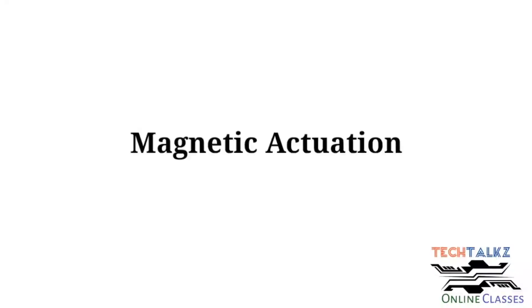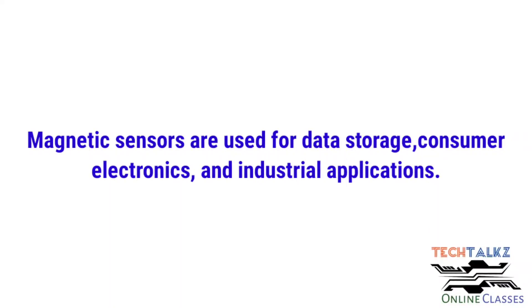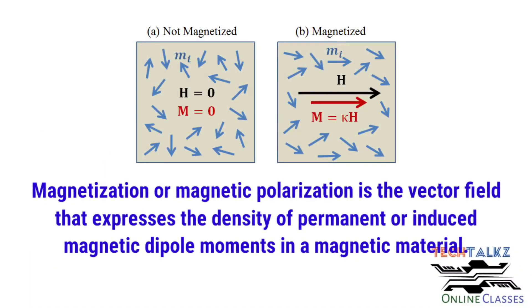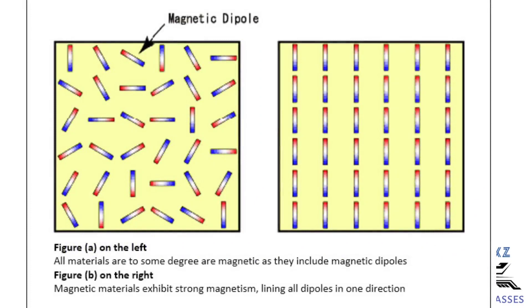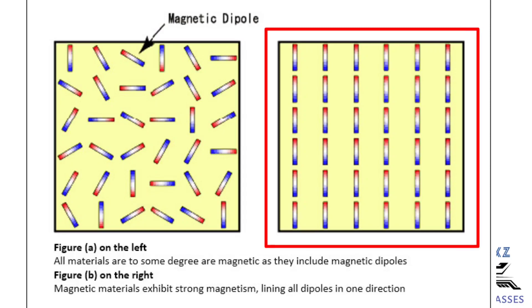Next topic is magnetic actuation. Magnetic fields and forces can be used to actuate micro-scale devices or can be used to create micro-sensors. Magnetic sensors are generally used for data storage, consumer electronics, and industrial applications. For a magnetic material, when an external magnetic field is placed, the magnetic material gets polarized and magnetic flux lines are produced internally. This phenomenon is called magnetization. A magnetic material is made of different magnetic dipoles. When these magnetic dipoles are aligned, this domain contributes a net internal magnetic field.